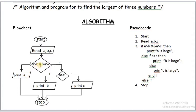If it is false, means A is not the largest. The remaining two values are B and C. We don't include A because it is false. In these two, if the next condition is true we get B on the screen; if it is false, we get C. Then stop.